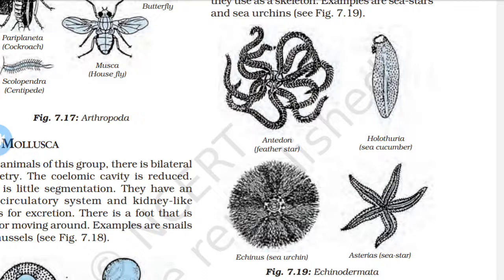To recap Echinodermata: 'echino' means spiny and 'derma' means skin — these are spiny-skin organisms and free-living marine animals. They are triploblastic with a body cavity and a hard calcium carbonate skeleton. Familiar examples include starfish, sea urchins, Antedon, Holothuria, Echinus, and Asterias.